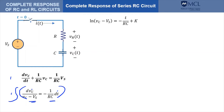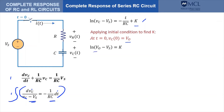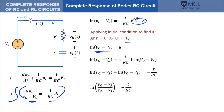We need to introduce a constant of integration. To find the constant, we apply the initial condition for the circuit. For example, what is the value of V sub C at T equals 0? Let's assume that V sub C at T equals 0 is equal to V sub 0. Applying this initial condition to this equation gives us K equals a specific value. We then use this value and replace K in the equation, giving us this new equation.